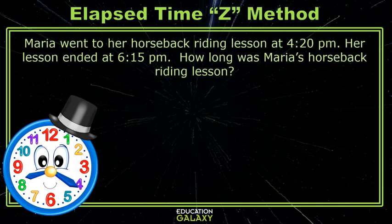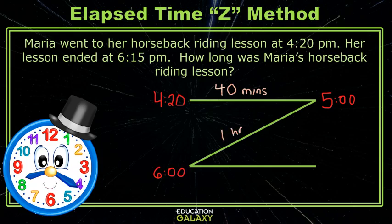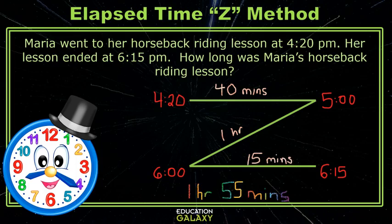Let's check out another method for solving elapsed time problems. Maria went to her horseback riding lesson at 4:20 p.m. Her lesson ended at 6:15 p.m. How long was Maria's horseback riding lesson? I like to call this the Z method. I make a giant Z. Start at the starting time, 4:20. I need to get to the next hour — that would be 5 o'clock, and it would take me 40 minutes. Then I want to see how many hours it will take me to get as close as I can to the ending time. To get to 6 o'clock it will take 1 hour. And then to get to the ending time, 6:15, it will take 15 minutes. That's a total of 1 hour and 55 minutes, which is our answer.